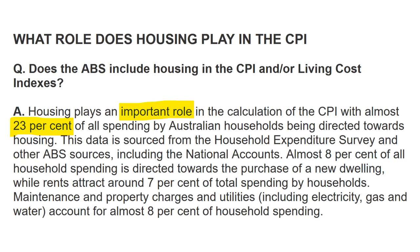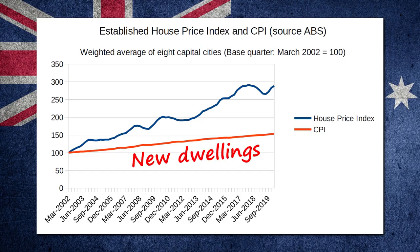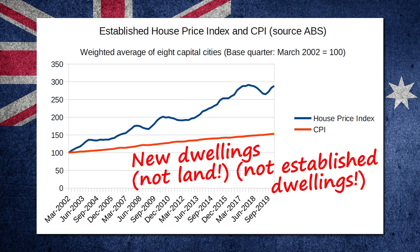I like how they answered a yes-no question with a non-yes-no response. Anyway, continuing: almost 8% of all household spending is directed towards the purchase of a new dwelling, while rents attract around 7% of total spending by households. Then they talk about electricity, gas, and water making up almost 8% of spending. This all sounds a little like beating around the bush. Of note: land is excluded from the calculation of the Australian CPI, because the purchase of land is considered an investment rather than consumption — apparently in accordance with international statistical standards. So in summary, only new dwellings are included in CPI calculations, but not the land they sit on, and importantly, established dwellings are also not included.